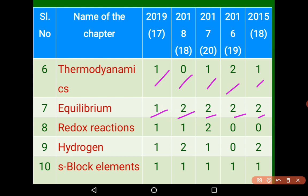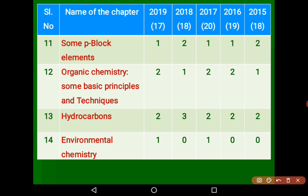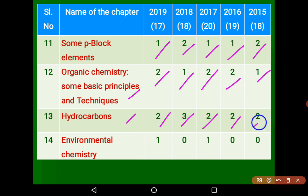Redox Reaction is a second-preference chapter — 1 mark, 1 mark, and 2 marks. Hydrogen is a simple chapter with 1 mark in 2019, 2 in 2018, 1 in 2017, 0 and 1 in earlier years. S-block Elements had 1 mark every year. P-block Elements had 1 mark in 2019, 2 in 2018, 1 in 2017, 1, and 2 marks. Organic Chemistry Basic Principles and Hydrocarbons are both very important in First PUC — consistently 2 marks each. Hydrocarbons had a minimum of 2 marks in previous years. Environmental Chemistry is the last preference — 1, 0, 1, 0, 0.